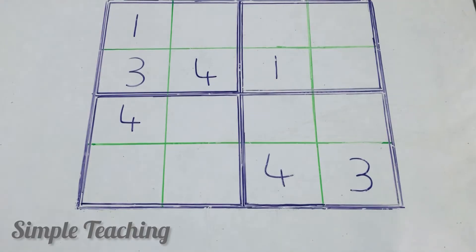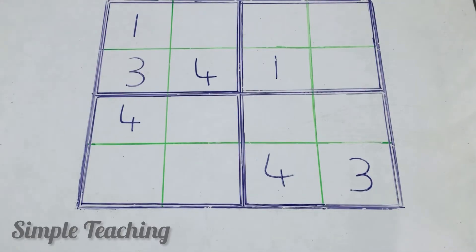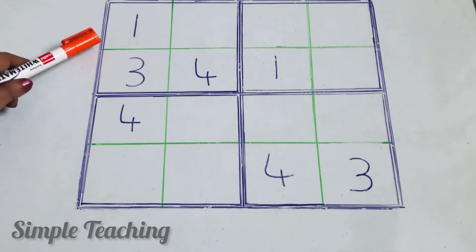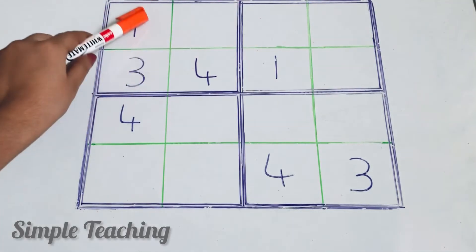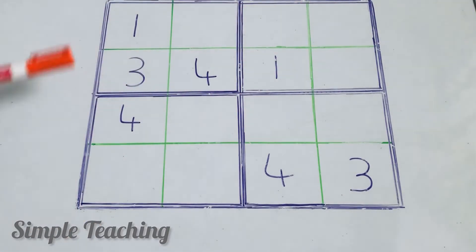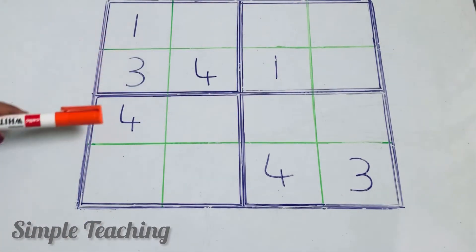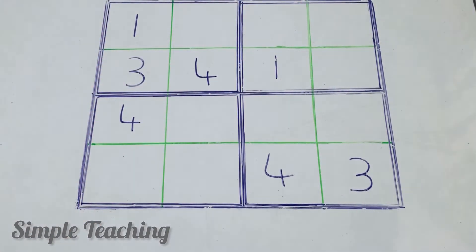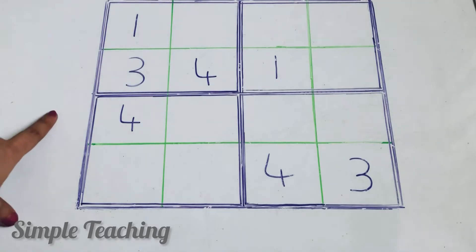Here we take a 4x4 Sudoku puzzle. A 4x4 Sudoku puzzle means in a row it will have 4 cells — 1, 2, 3, 4 — and in a column — 1, 2, 3, 4 — 4 cells. So this is called a 4x4 Sudoku puzzle. First let us see what the rules are.